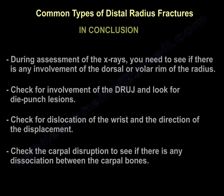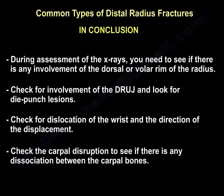In conclusion, there are many types of distal radius fracture. When assessing x-rays, check for involvement of the dorsal or volar rim of the radius, look for DRUJ involvement, and identify any die punch lesions. Check for dislocation of the wrist and the direction of displacement. Also check for carpal disruption to identify any dissociation between the carpal bones.